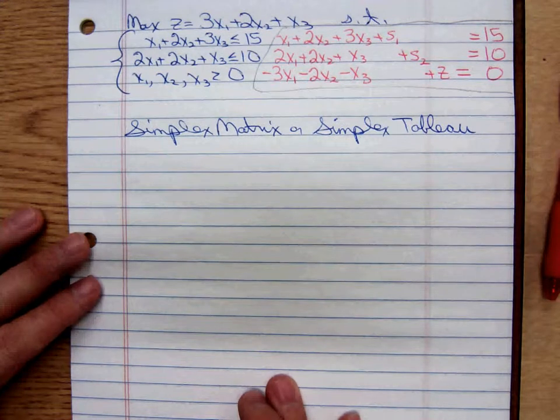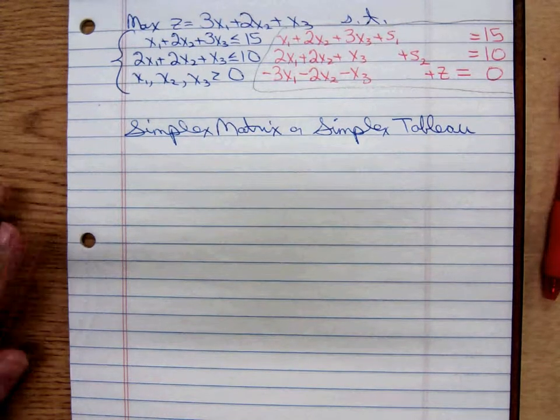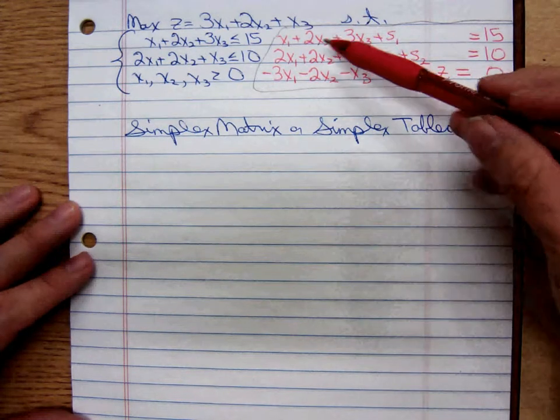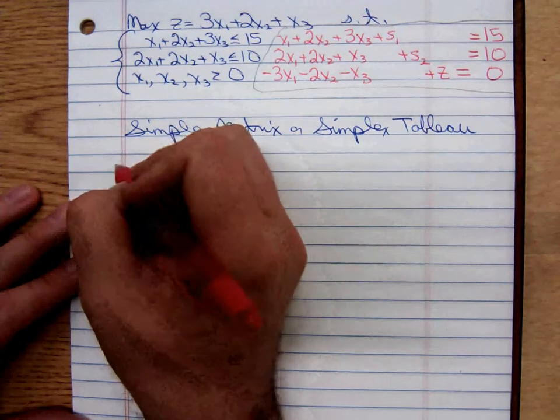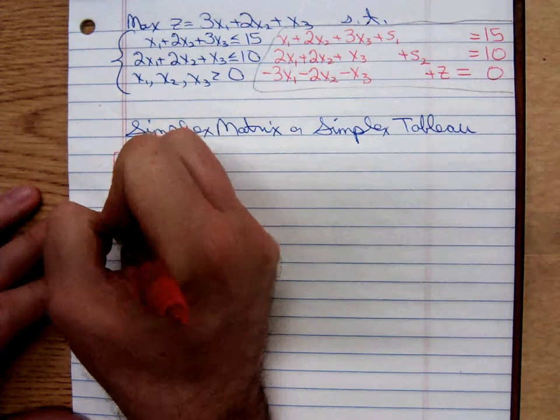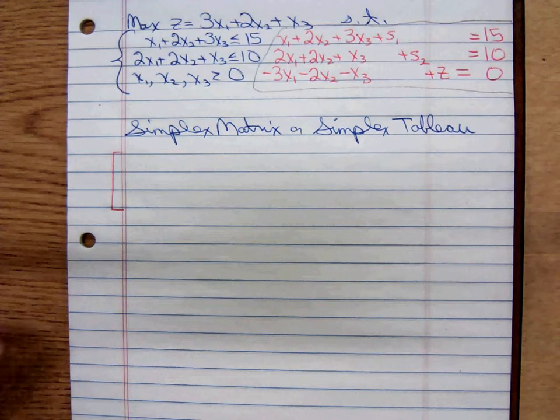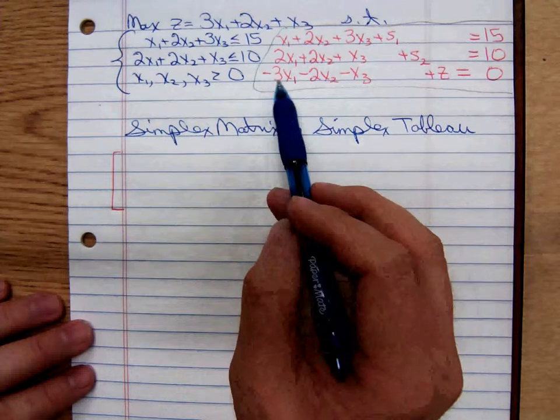Realize, there's going to be quite a few columns here. We're going to have three rows, one for each equation.